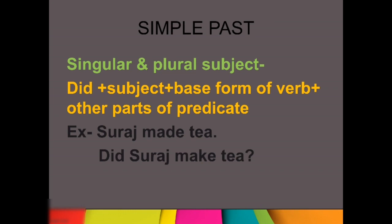I hope this is clear. Now let's talk about simple past tense — agar past mein aapka sentence hai. In this case, singular and plural subject mein same rule use hoga. What will be the structure? Did plus subject. Pehle humne Do and Does use kiya tha. But now we are in the past tense, we are going to use did. Did plus subject plus base form of the verb and other parts of the sentence. Let's take example again. Suraj made tea — ye sentence past mein hai. In this case: did plus subject — that is Suraj. Did Suraj make tea? Make kya use kiya? Because it is the base form. Made to uska next form hai.